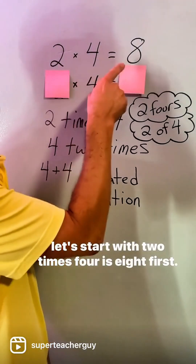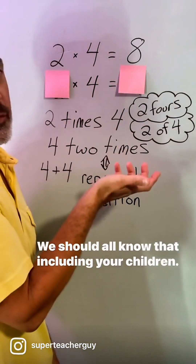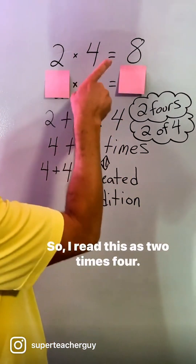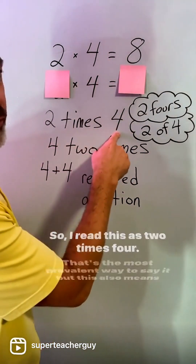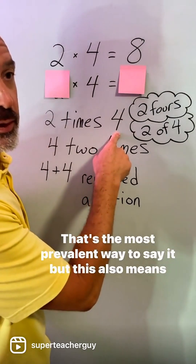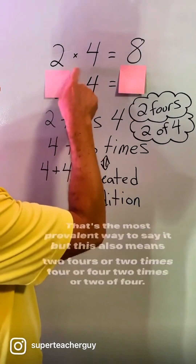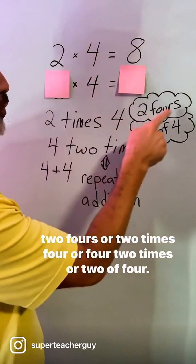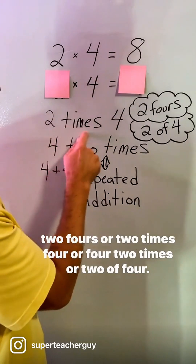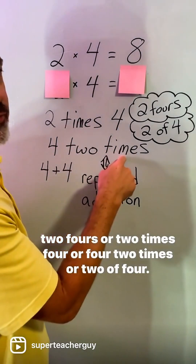Let's start with 2 times 4 is 8 first. We should all know that, including your children. I read this as 2 times 4 — that's the most prevalent way to say it. But this also means 2 fours, or 2 times 4, or 4 two times.